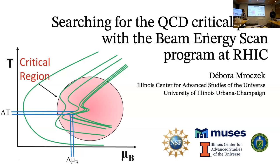We have Deborah Montcek here from UIUC. She's a grad student there and a graduate fellow at the Illinois Center for Advanced Studies of the Universe. She was originally at University of Houston for her undergrad, where she won the Best Undergraduate Senior Thesis Award. She has worked on the beam energy scan theory collaboration and works on the equation of state. I'll let her take it away on QCD critical point search with BES.